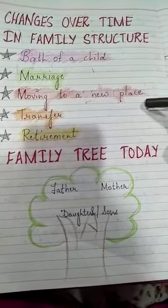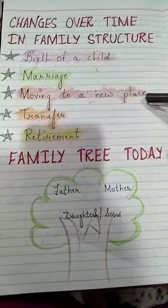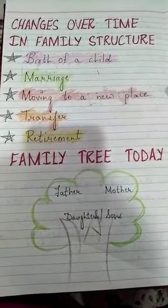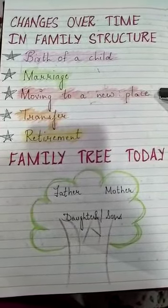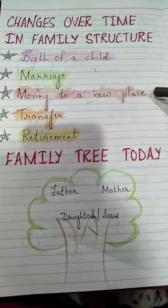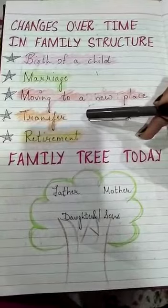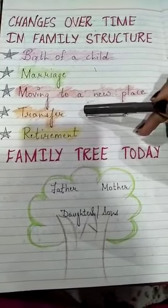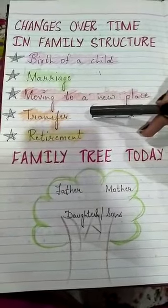The third point is moving to a new place. Suppose you are living in a joint family and your father is moved to a new city. You will also shift along with your father and mother, so that brings a change in the family structure. If your father is in a government job and he is transferred, you again have to change your place, which also brings a change in the family.